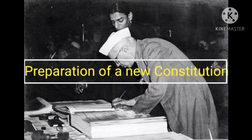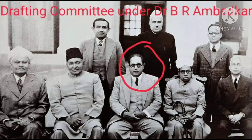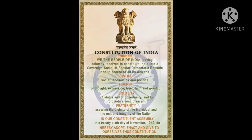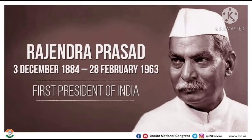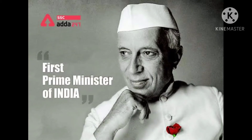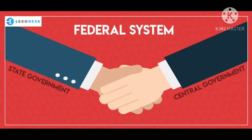Preparation of a new constitution: The Constituent Assembly was engaged in drawing up a constitution for India. The drafting committee under Dr. B. R. Ambedkar completed its work on 26th November 1949. Finally, the constitution came into force on January 26th, 1950, when India was declared a sovereign democratic republic with Dr. Rajendra Prasad as its first president and Pandit Jawaharlal Nehru as its first prime minister. The constitution guaranteed all Indians fundamental rights and equality before the law. It prohibits discrimination on grounds of caste, religion, region and gender. India was to have a federal government with powers demarcated for the centre and state.